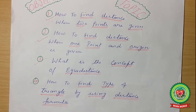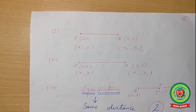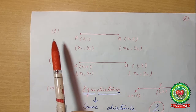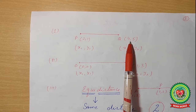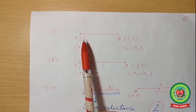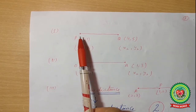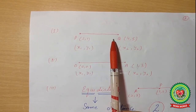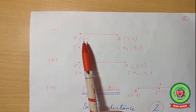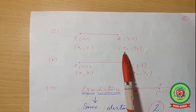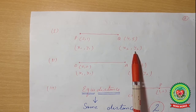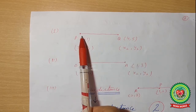Before starting this topic, let's recall what we covered in previous lectures. In our first lecture, we had to find the distance between two given points. The first point is represented as (x1, y1) and the second point as (x2, y2). By applying the distance formula, we can find out the length.